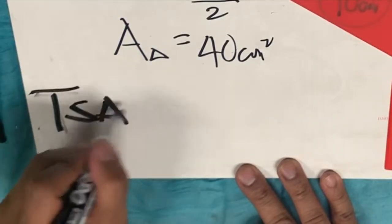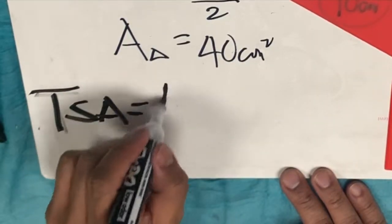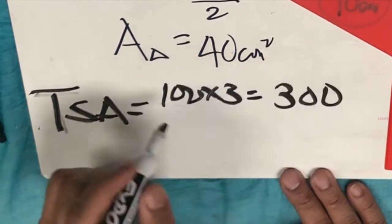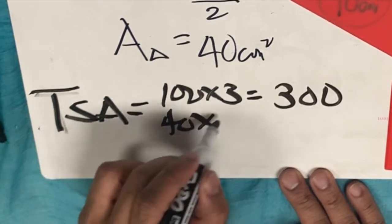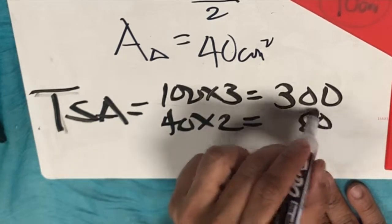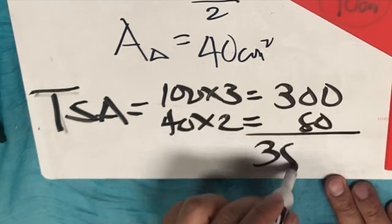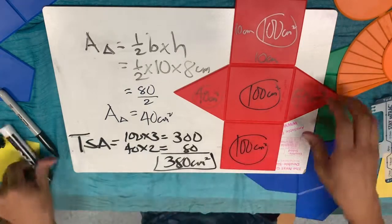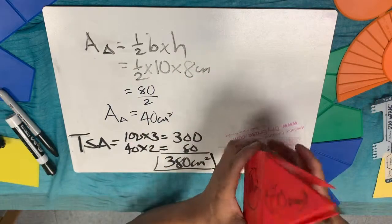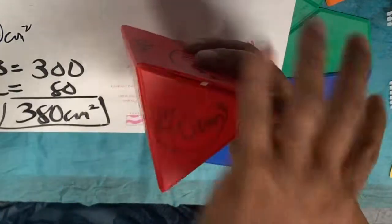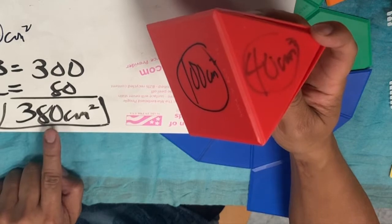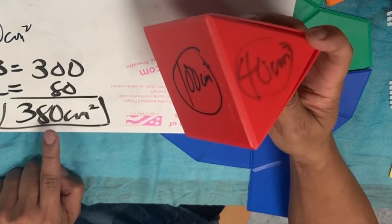The total surface area equals 100 times 3 (300) plus 40 times 2 (80), giving us 380 square centimeters. This means covering the entire surface of this triangular prism requires 380 square centimeters.